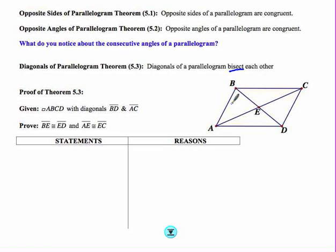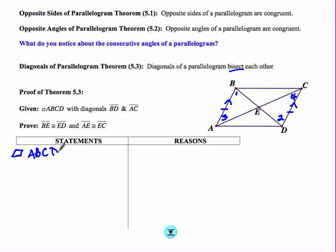We'll begin by marking our diagram, confining the markings to those we need. We mark AB congruent to DC, and AB parallel to DC. I'm also going to label angle 1 and angle 2 — those are alternate interior angles between parallel lines — and then angle 3 and angle 4. We now turn to the proof and restate our given information: parallelogram ABCD with diagonals BD and AC.